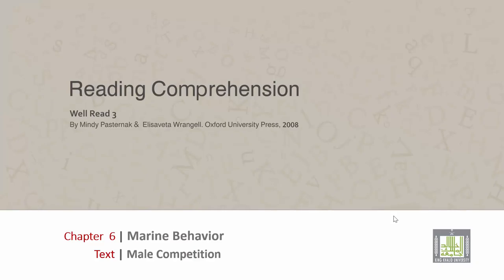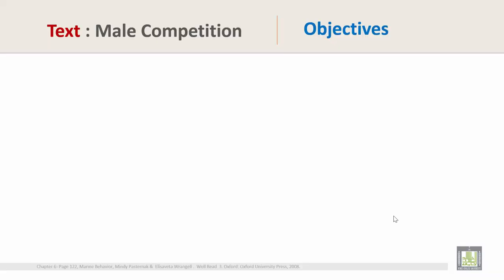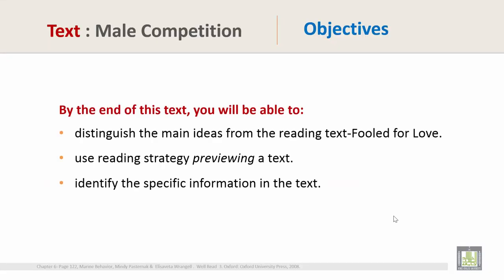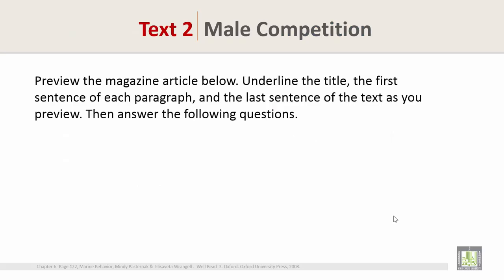Hi everyone, today we are going to start chapter 6: Marine Behavior Text, Male Competition. Objectives: by the end of this text you will be able to distinguish the main ideas from the reading text 'Fooled for Love,' use reading strategy previewing the text, and identify the specific information in the text.